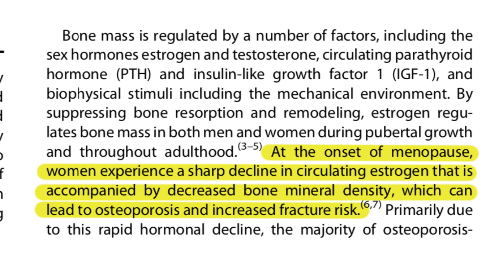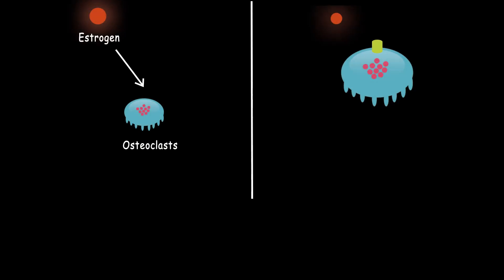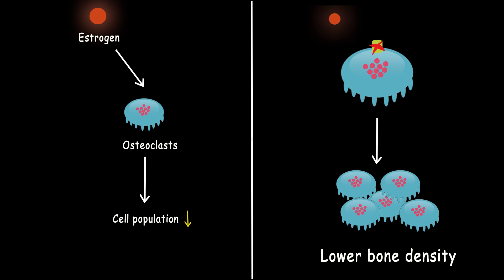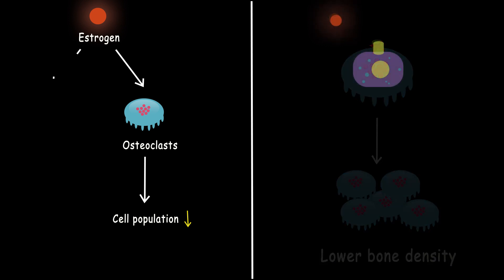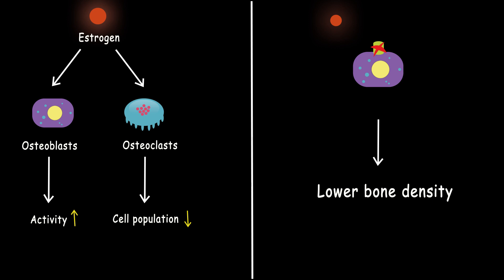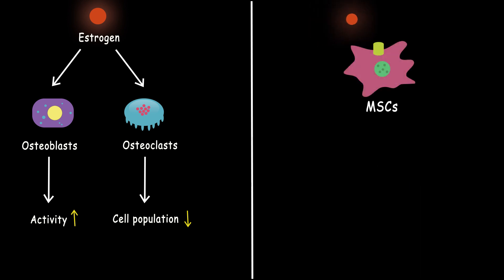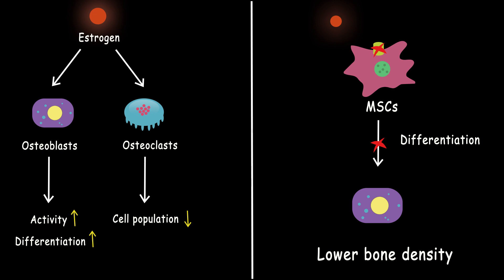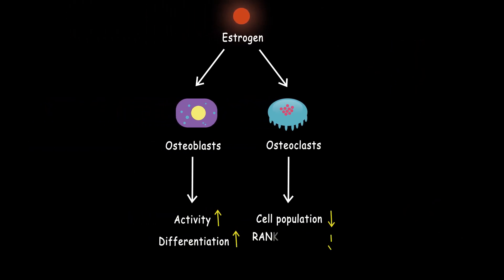So what happens when the estrogen level drops? A study by Melville and colleagues showed that the deletion of estrogen receptors on osteoclasts in female mice would decrease bone volume due to an increase in the number of osteoclasts. However, this deletion in male mice does not alter bone mass. If you delete this exact gene in osteoblasts of female mice, it would dramatically decrease the cancellous and cortical bone mass due to a reduction in osteoblast activity. Another study showed that this deletion in mesenchymal stem cells decreases the population and differentiation of these cells to osteoblasts, and also suppresses osteoclast differentiation by blocking the RANKL signaling pathway. Plus, estrogen can induce osteoclast apoptosis. So you can see how a low level of estrogen can decrease bone mass dramatically.